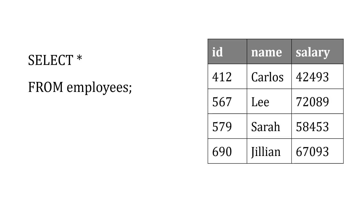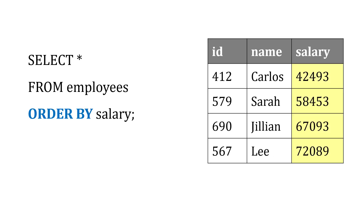Let's imagine we have a table of employees. We can select them all using this statement. But if we want to order them by their salary, for example, we add that at the end. By default, it's going to be ascending — so from the lowest to the highest salary.